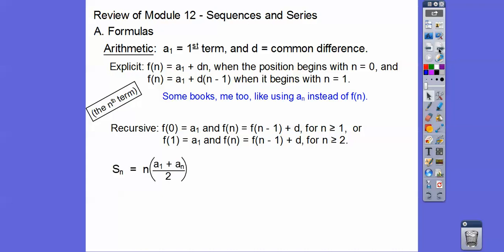And then there's the sum of the first n terms of an arithmetic sequence: n times the first term plus the last term, divided by 2.